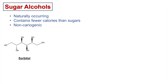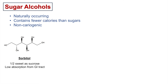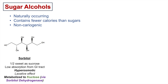One of them is sorbitol, a sugar alcohol. You can see that there are many hydroxyl groups attached to this compound. Sorbitol is about half as sweet as sucrose. It has low absorption from the GI tract and is hyperosmotic, meaning it can pull water toward it, which can lead to a laxative effect — consuming a lot of sorbitol can cause diarrhea. Importantly, sorbitol is metabolized to fructose via the enzyme sorbitol dehydrogenase in the polyol pathway, which is why it can contribute some calories.